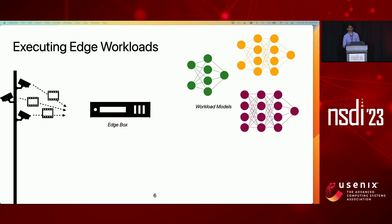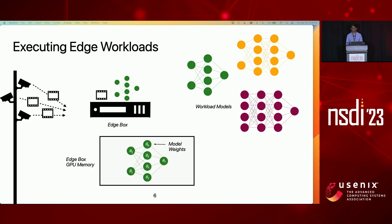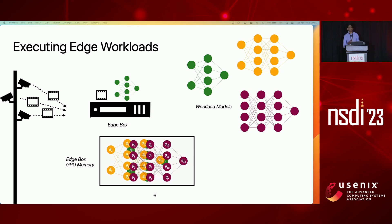These workloads are typically executed like any other model inference-serving platforms. As frames stream in, corresponding models are sequentially executed on the frames in real time. In order to process a frame with a model, the model's weights need to have been loaded into GPU memory. These weights correspond to the set of values that parameterize the model's different layers of computation, and these layers make up most of a model's memory profile. So all of these models need to have been loaded into GPU memory.